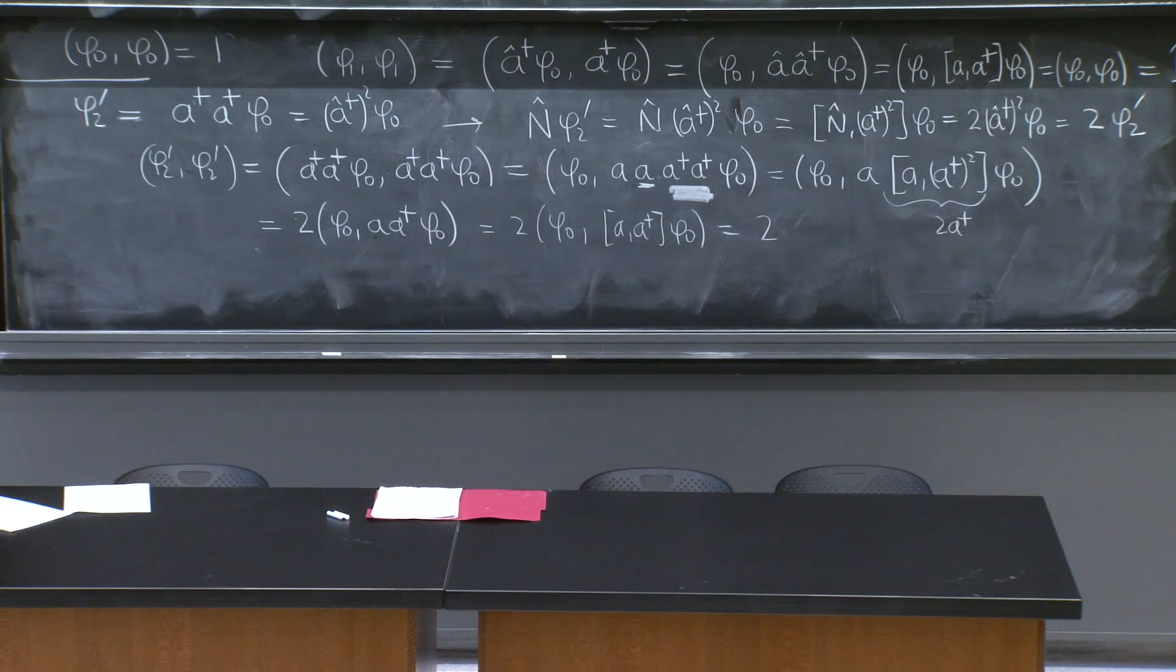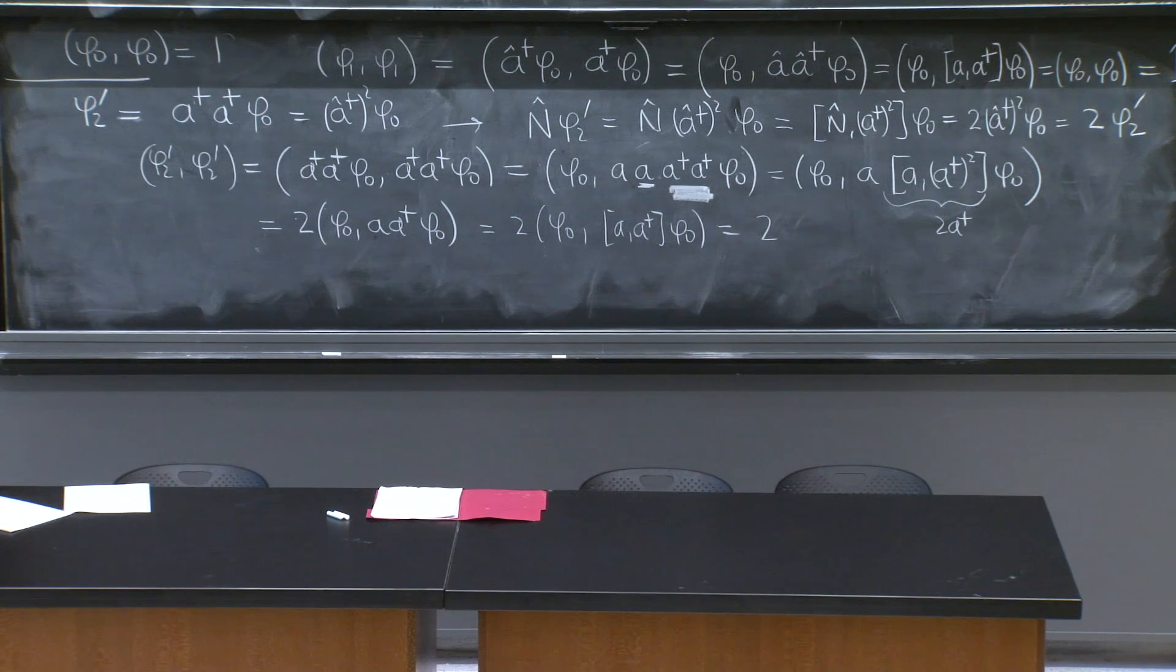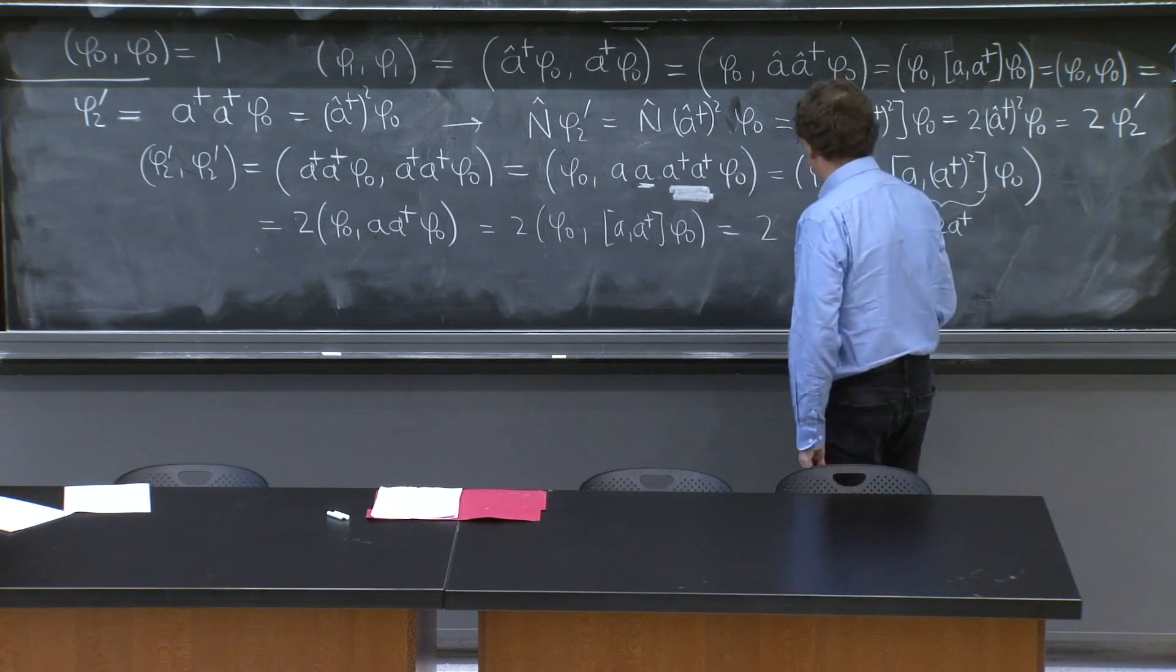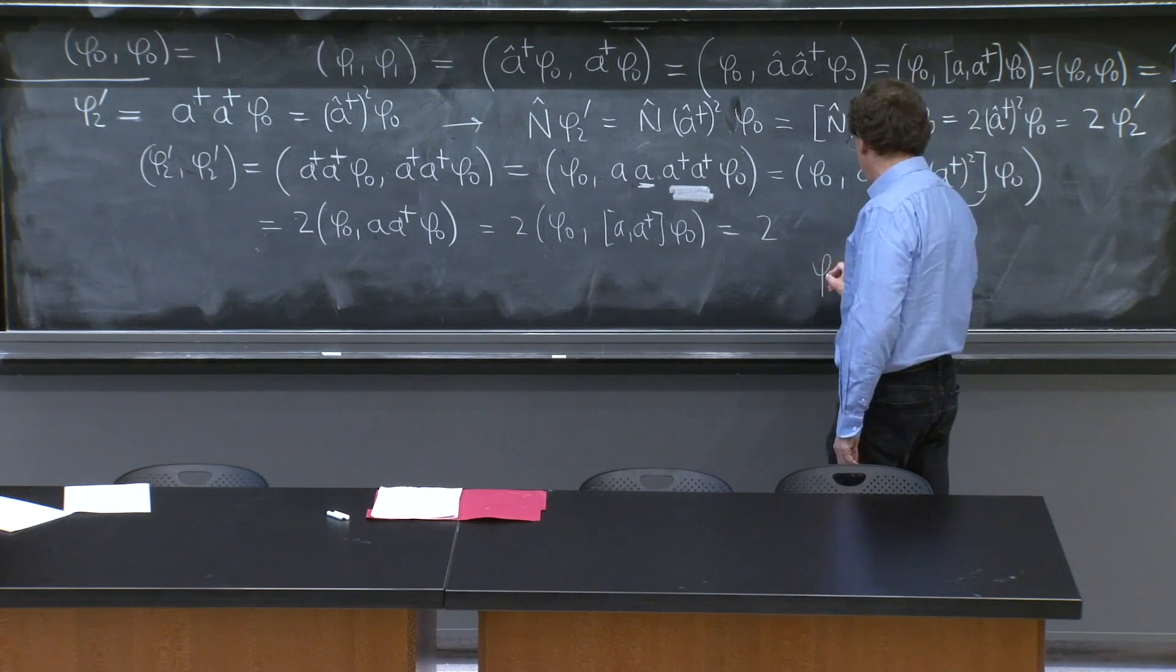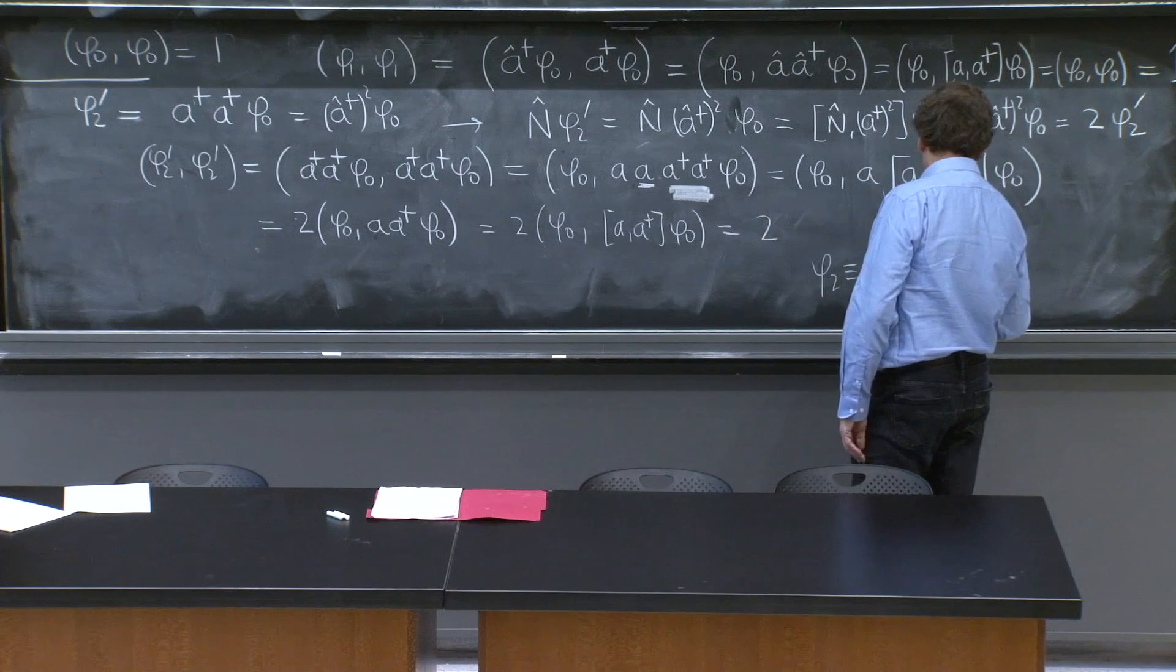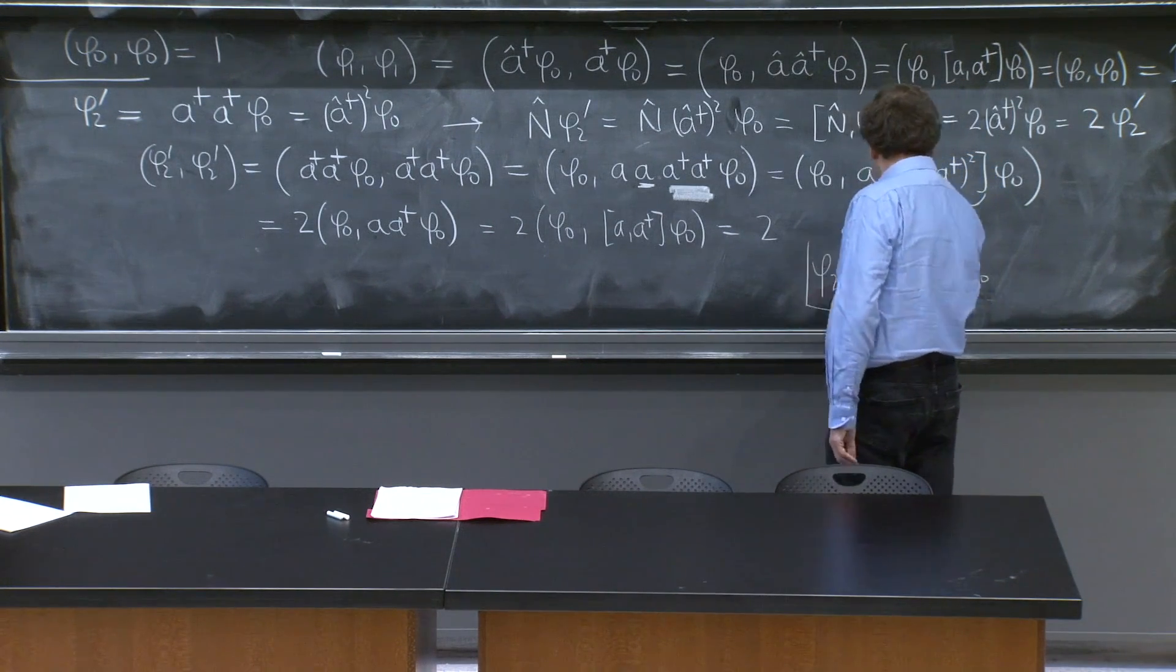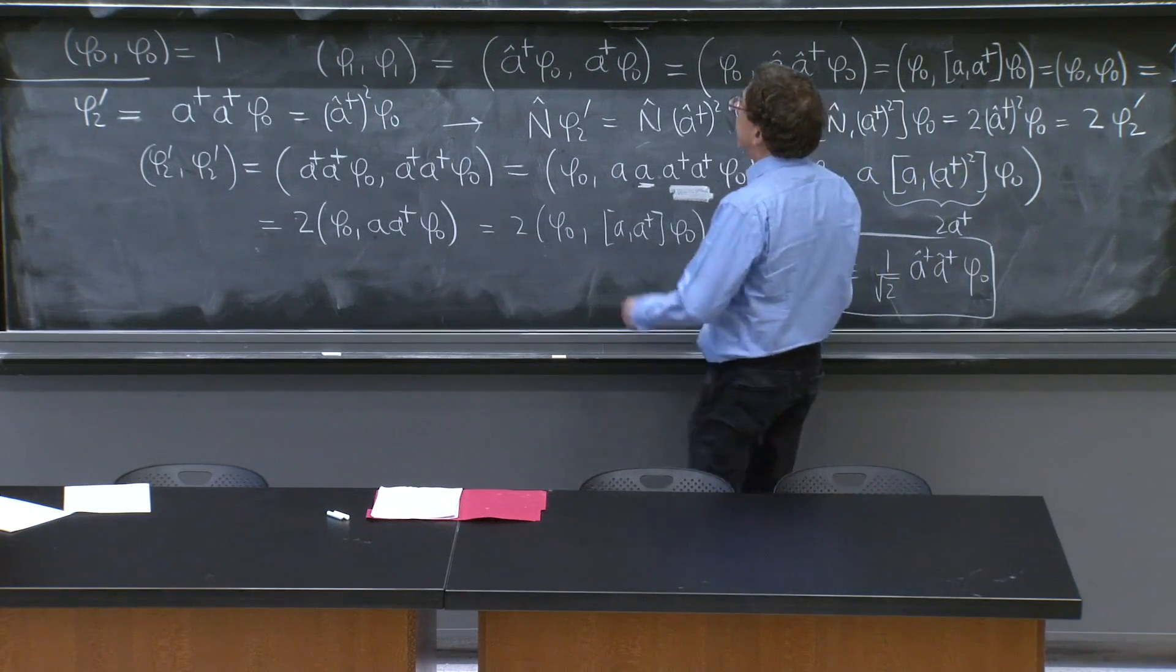So this phi_2 prime, yes, it is the next excited state. Two creation operators on the ground state. Energy n eigenvalue is 2. You have n equals 0 eigenvalue for the ground state, 1 for phi_1, 2 for phi_2 prime. But it's not properly normalized. Well, if the normalization gives you a 2, then you should define phi_2 as 1 over square root of 2, a dagger, a dagger on phi_0. And that's proper.